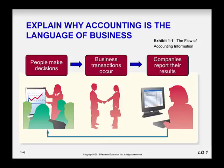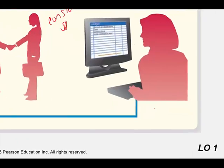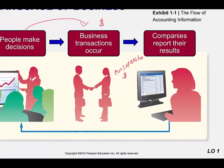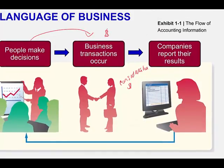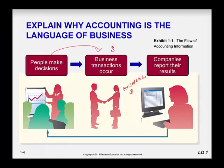First, we want to show that people make decisions, then those decisions are actually converted into transactions. Usually those transactions require money, and because they have some financial consideration — which is money — they generate a report, which would be the financial statements or the journals. So there we would have our financial statements and our journal entries.